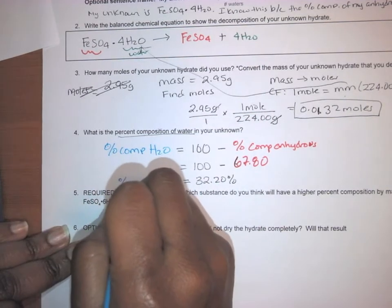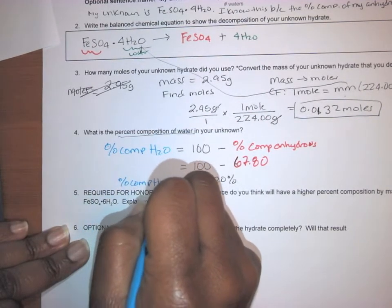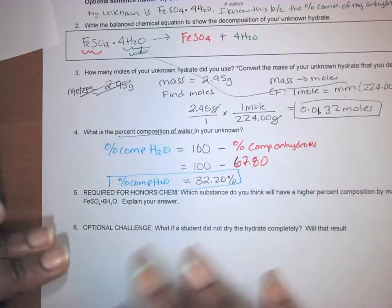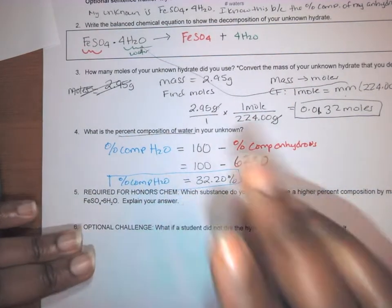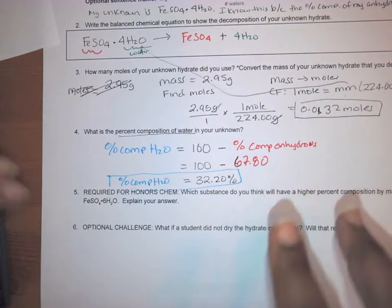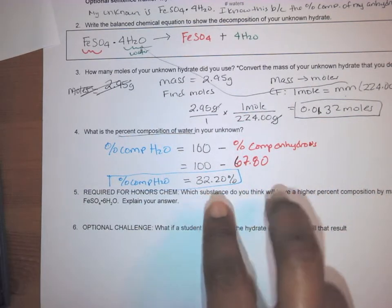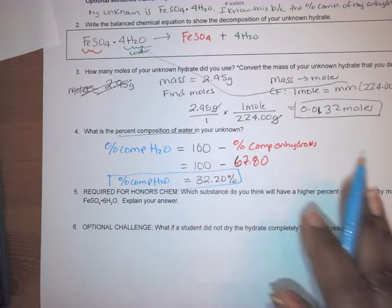And the reason why this works is because when you add up the percents of things, they should equal to 100. So your anhydrous and your water are the two parts of this compound of the hydrate. So therefore when you add up their percentages, you go a hundred.